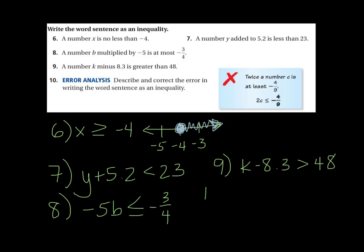And the last one, oh, let's make the numbers consistent there. The last one, number 10. Describe and correct the error in writing the word sentence as an inequality. And they have, twice a number c is at least negative 4 ninths. Negative 4 ninths. Well, what they've done incorrectly here is they have the wrong inequality symbol. Twice a number c is at least negative 4 ninths. Well, can it be equal to negative 4 ninths? Yes, it can. Again, the least it can be is that, so it could be equal to that. But it's really going to be what? If it's the least it could be, it's really going to be more. That's right. So that's their mistake. That inequality symbol is wrong.